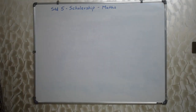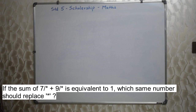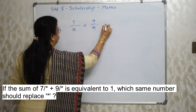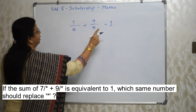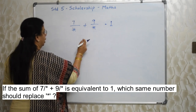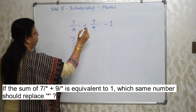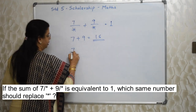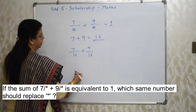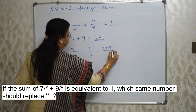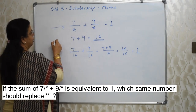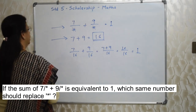Next sum: 7 upon asterisk plus 9 upon asterisk equals 1. What same number should replace asterisk? Here is a shortcut: whenever the result is 1 and the same number appears in both denominators, just add the numerators. 7 plus 9 is 16, so asterisk equals 16. Verification: 7 upon 16 plus 9 upon 16 equals 16 upon 16, which is 1. Correct!